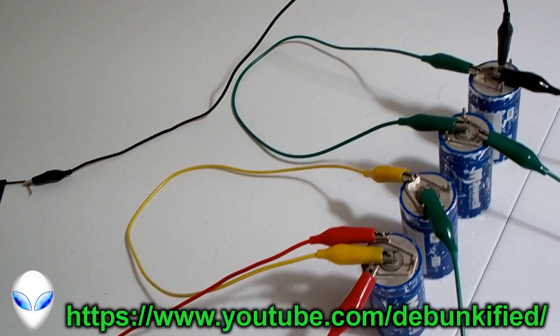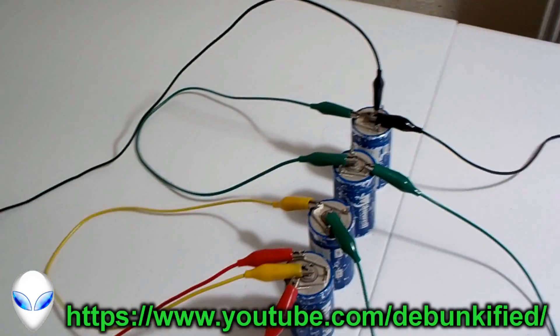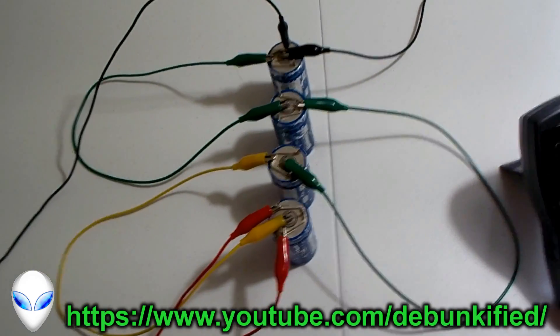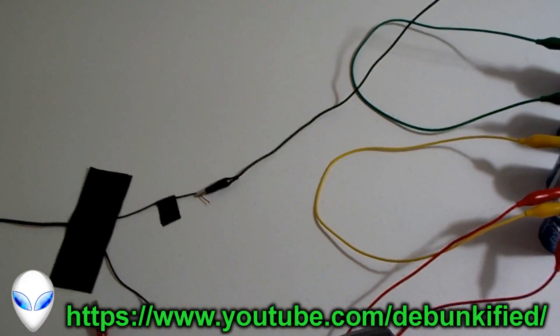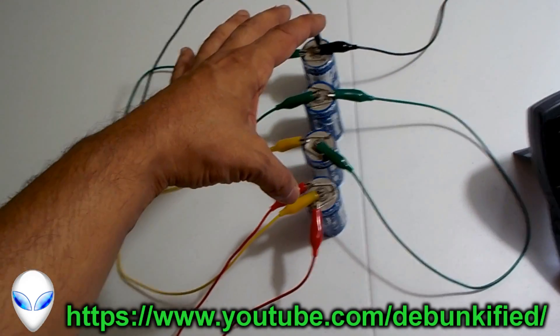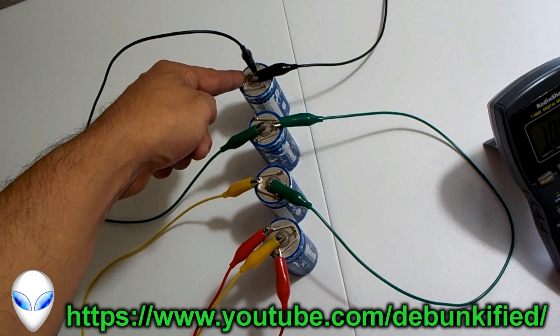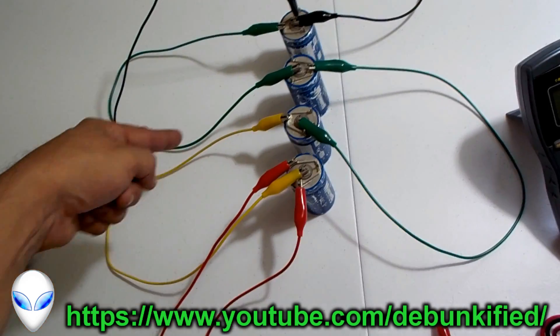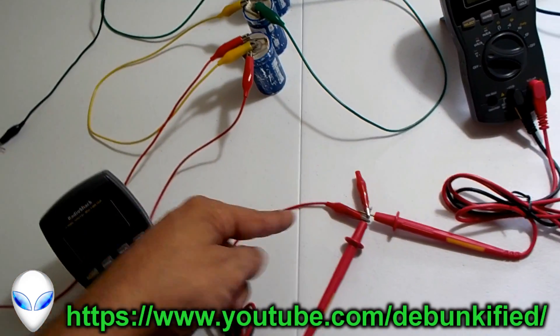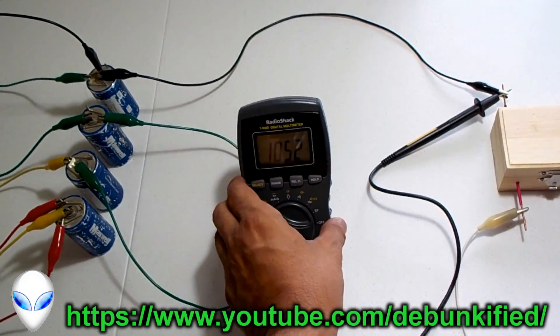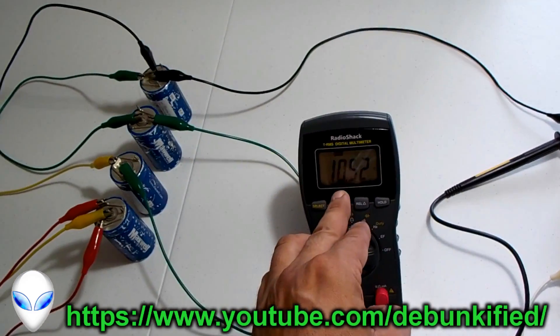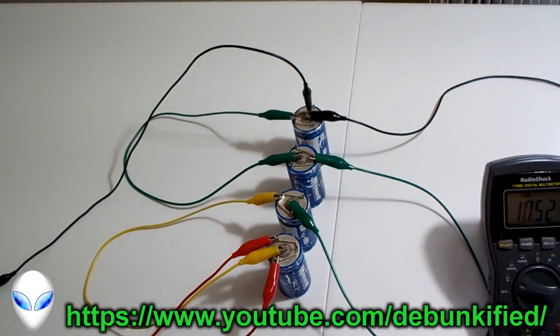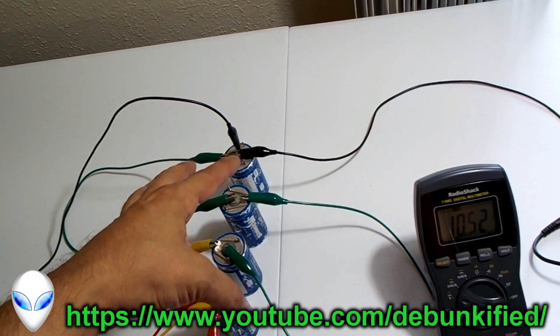So basically I use this to charge up the super capacitors. They're all in series: this is the positive, the negative, and a positive, then negative, and a positive, negative, positive. We're reading voltage across our super capacitor which is 10.52 volts. That's the power source voltage.